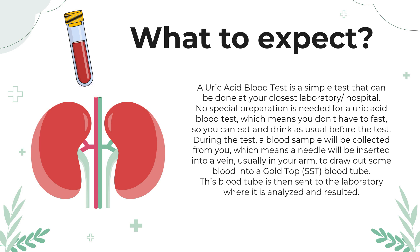A uric acid blood test is a simple test that can be done at your closest laboratory or hospital. No special preparation is needed, which means you don't have to fast — you can eat and drink as usual before the test. During the test, a blood sample will be collected; a needle will be inserted into a vein, usually in your arm, to draw blood into a gold top or SST blood tube, which is then sent to the laboratory to be analysed and resulted.